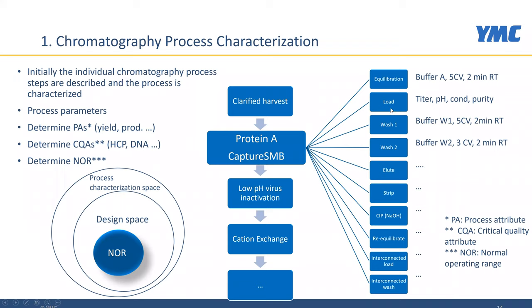Flow rates, washing volumes of equilibration volumes of buffers, and buffer types—a lot of this information can be taken from single column batch chromatography. We do not need to analyze the process in its Capture SMB format; we already know most of these parameters from single column experience. Next we determine process attributes such as yield and productivity, and we judge the Capture SMB process by the same criteria. CQAs are exactly the same as in single column chromatography—protein contents, DNA contents, etc.